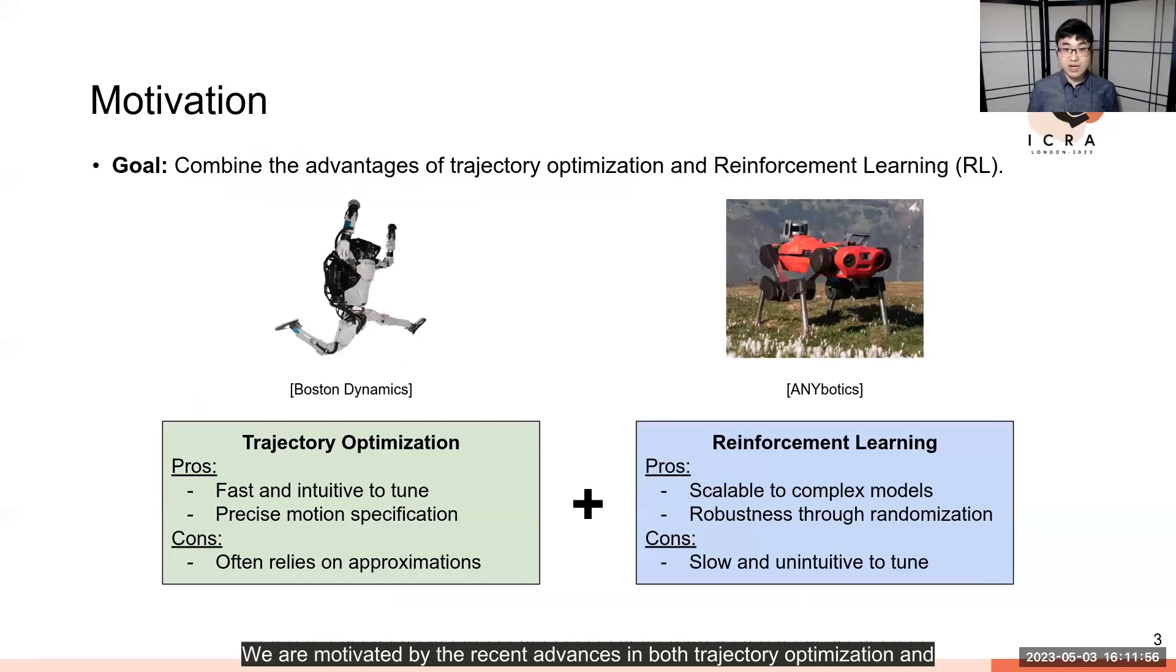We are motivated by recent advances in both trajectory optimization and reinforcement learning-based methods for motion control. In particular, we wish to combine the fast, intuitive, and precise motion specification capabilities of trajectory optimization-based control, such as model predictive control, with the scalability of reinforcement learning towards model complexity or even randomized dynamics to enable robust real-world deployment.